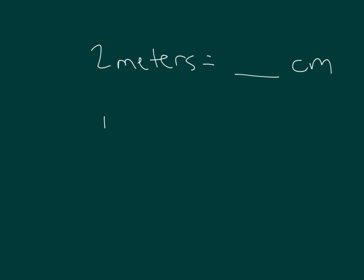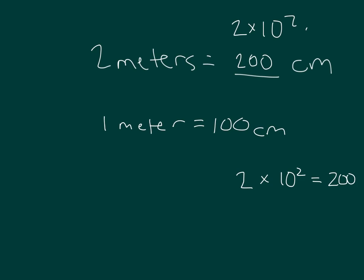Well, 1 meter equals 100 centimeters. So 2 meters equals 200 centimeters. How could I write that as a power of 10? Well, that would be 2 times 10 squared. 2 times 10 squared, which does equal 200. So that's 2 times 10 squared centimeters.